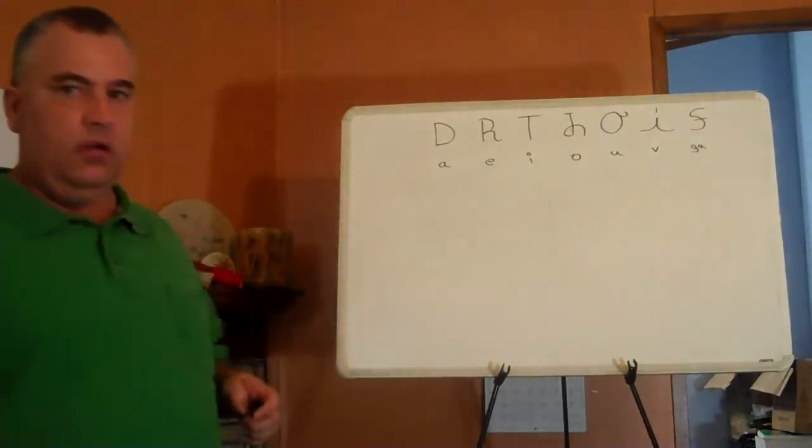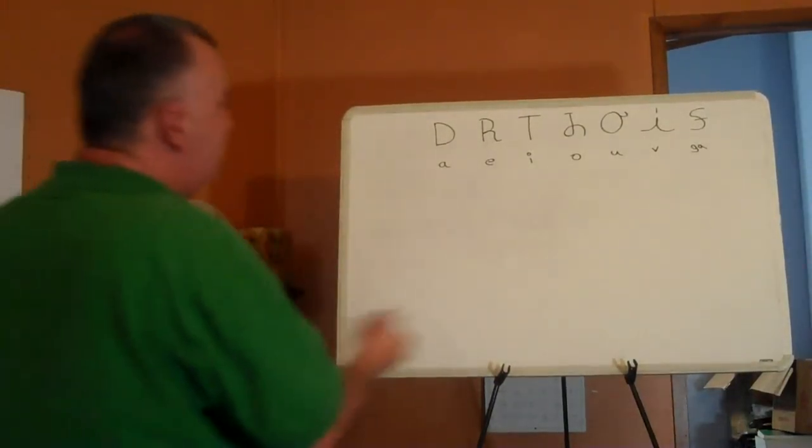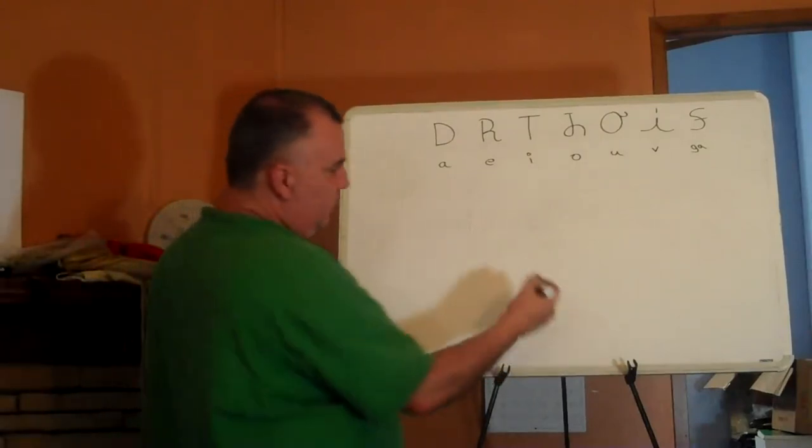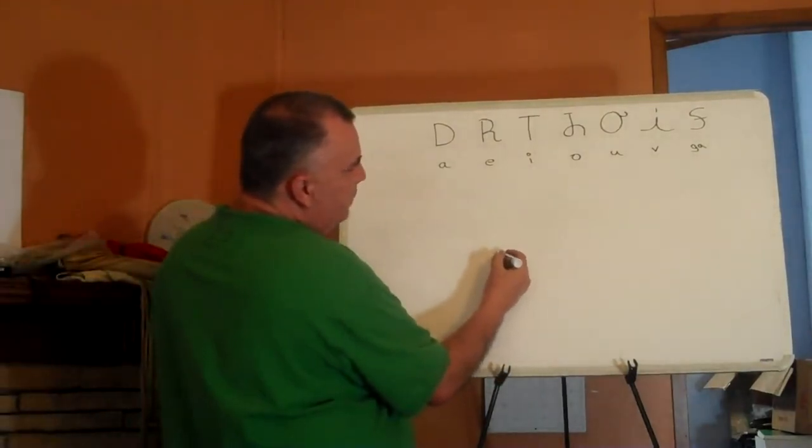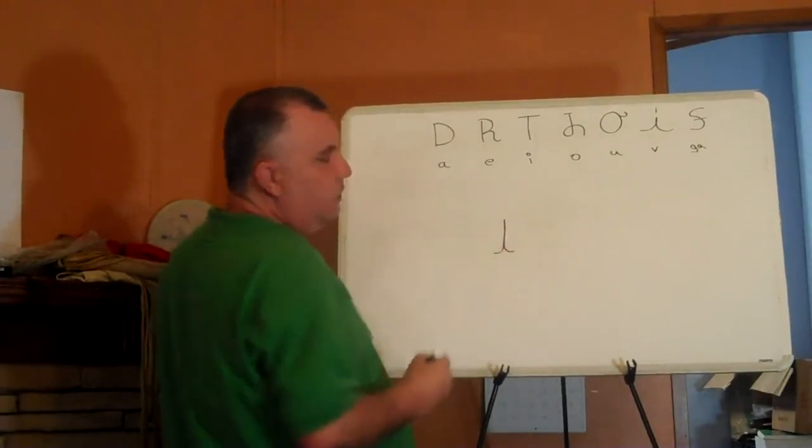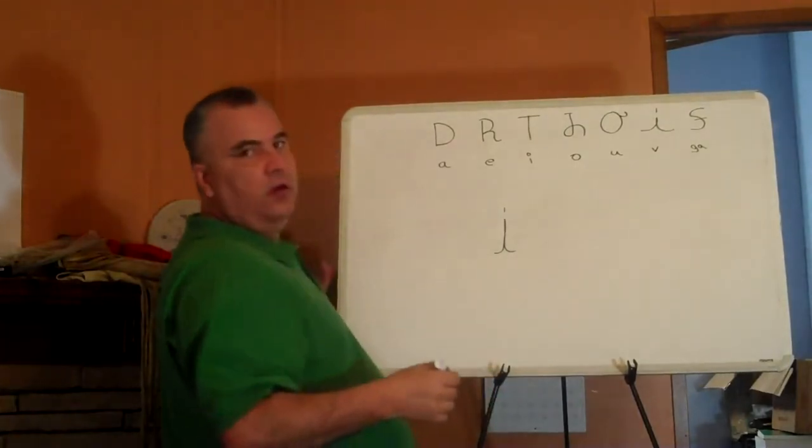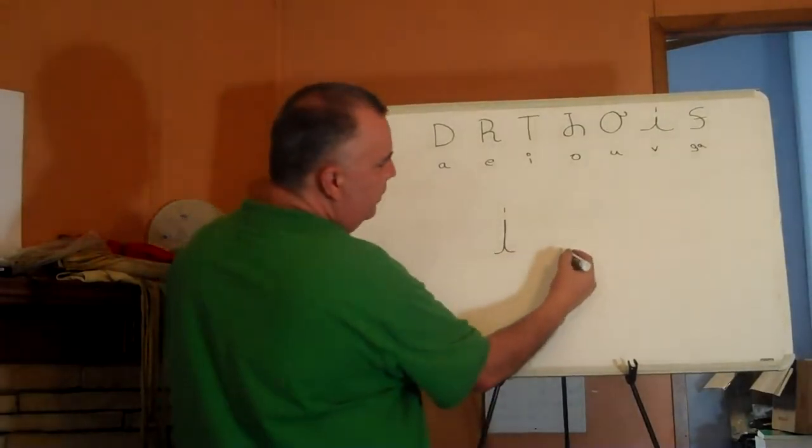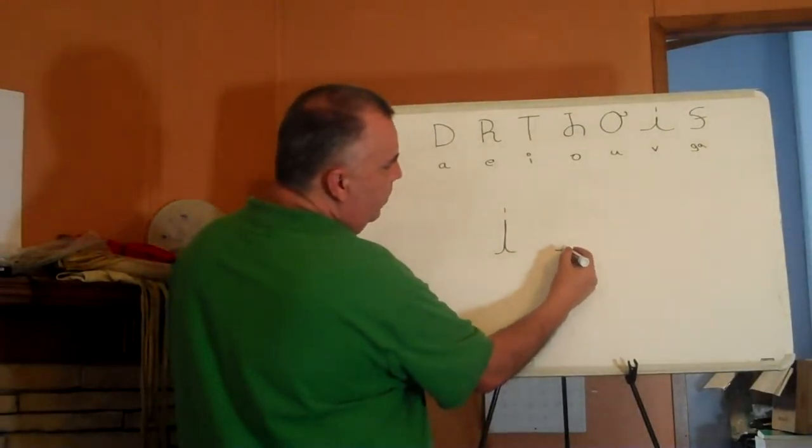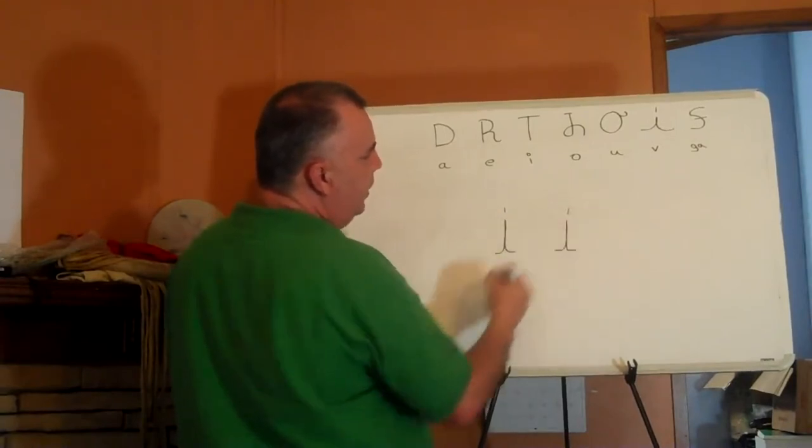Now for the letter V. The letter V is pretty simple. You start at the base, you pull up, you go back down, just like that, and you give it a dot. That's the letter V. Again, you start, you go straight up, come back down, and you give it a dot.